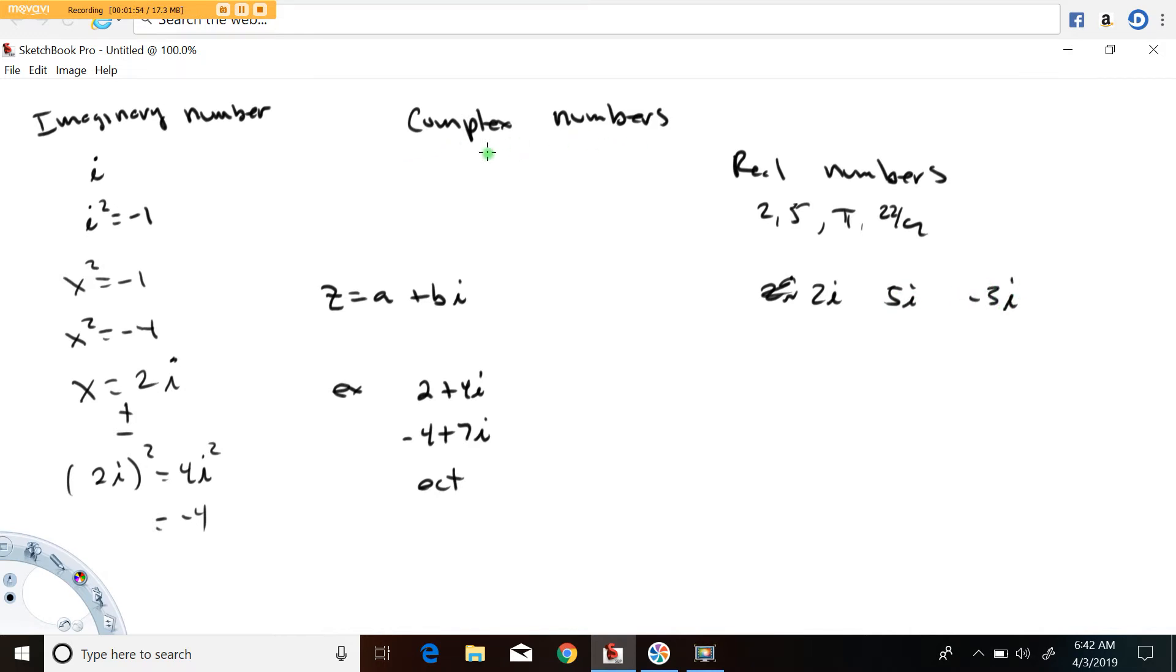In general, a complex number can be written in the form a plus bi, where a is the real part and bi is the imaginary part.